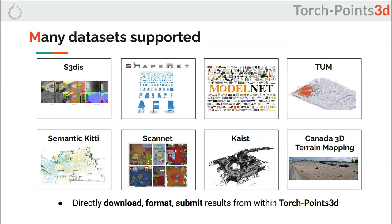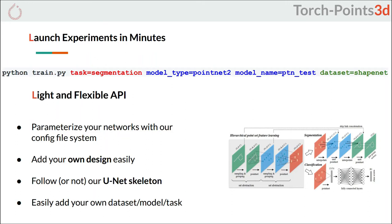Everything in the framework is tied together with a flexible system of configuration files. This allows you to launch an experiment with a single line. Simply specify your task, the general architecture of your network, and where to find its configuration file. Finally, pick a dataset.